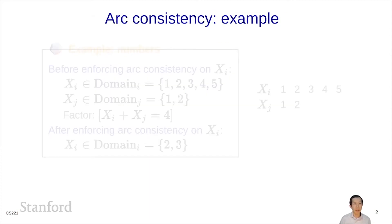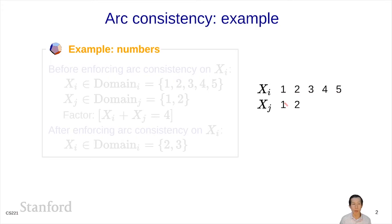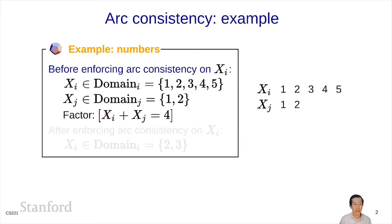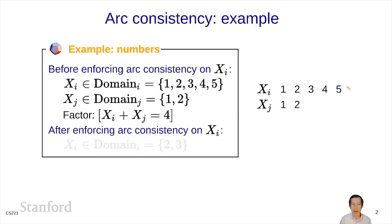Before we get into AC3, I need to talk about R-consistency using a simple example. Suppose we have just two variables, xi and xj. Xi can be 1, 2, 3, 4, or 5, and xj can be 1 or 2. Xi and xj are related via a single factor which says that their sum must equal 4 exactly. So what does it mean to enforce R-consistency on xi? This means I'm going to go through each of the values in the domain of xi and try to eliminate it if it can't be satisfied by any value in xj's domain.